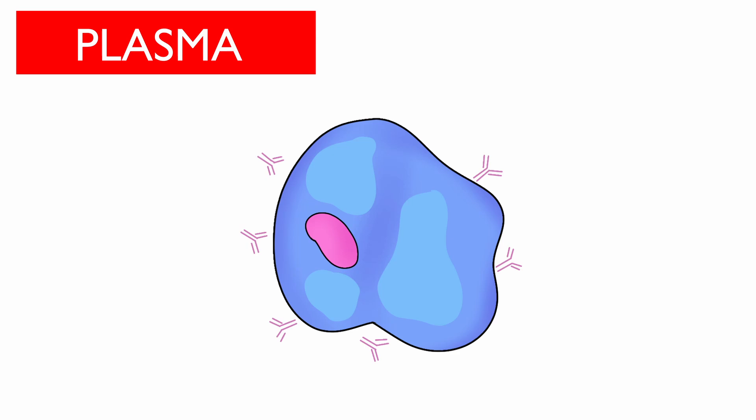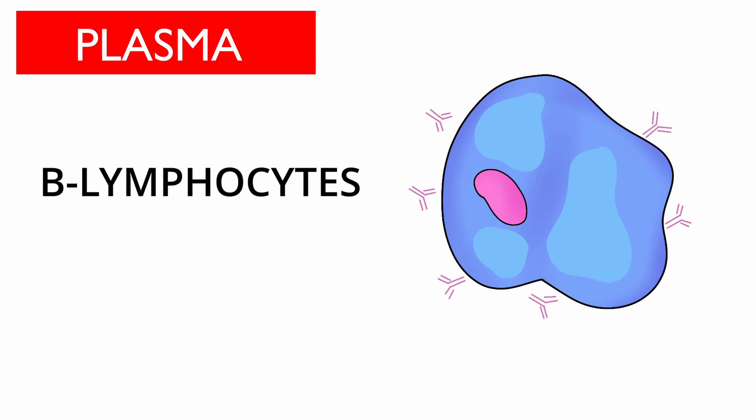Next, we have plasma cells, also known as plasma B cells, which are a type of B lymphocytes that play a crucial role in the immune system. They have a cartwheel-like nucleus and will be seen in large numbers during infections as their role is to secrete antibodies.